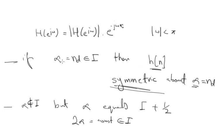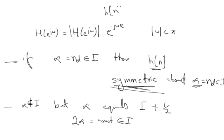If these two conditions don't hold, the impulse response will not exhibit any symmetry. To summarize: if the delay α is a constant integer, the impulse response is symmetric about α. If α equals an integer plus one-half (so 2α is an integer), the impulse response is again symmetric about α. Otherwise, the impulse response h of n will be non-symmetric.